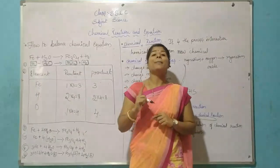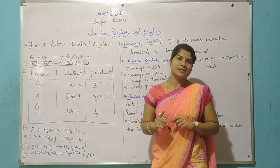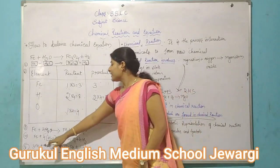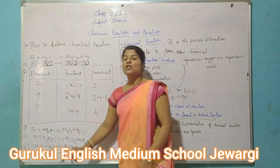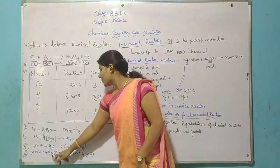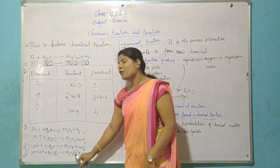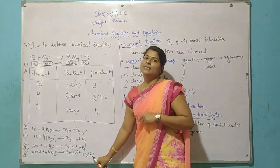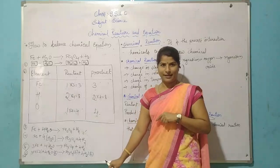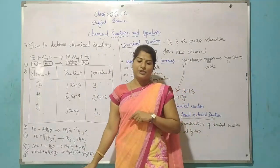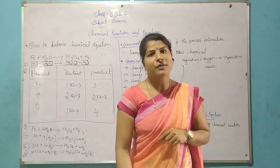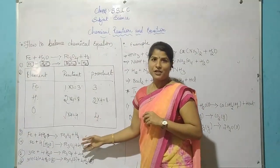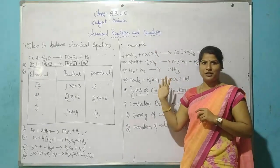After balancing, we must mention the physical state of each substance. In 3Fe the state is solid, H2O is in the gaseous state, Fe3O4 is in the solid state, and 4H2 is in the gaseous state. This is the balanced chemical equation. Some other examples are given for you to note down and solve in the same way.